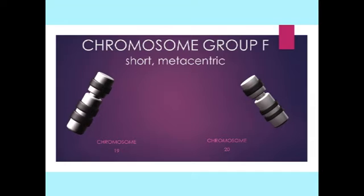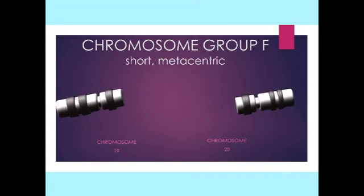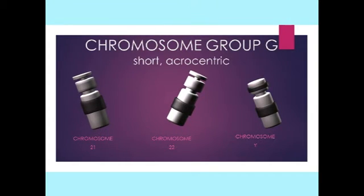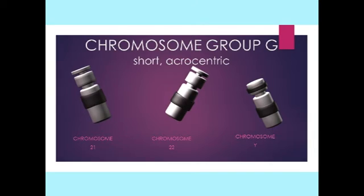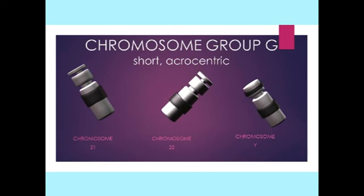Chromosomes of group F include chromosomes 19 and 20, which are short, metacentric chromosomes. Chromosomes of group G include chromosomes 21, 22, and the Y chromosome, which are short, acrocentric chromosomes. Chromosomes 21 and 22 are satellite chromosomes.